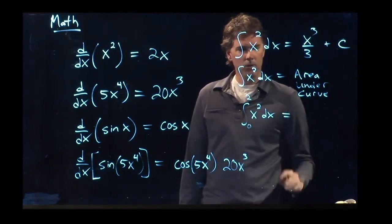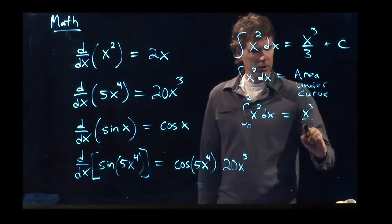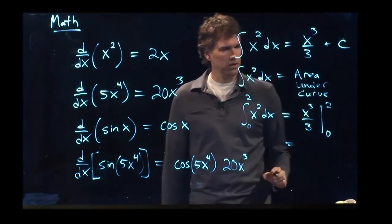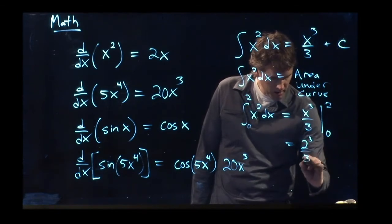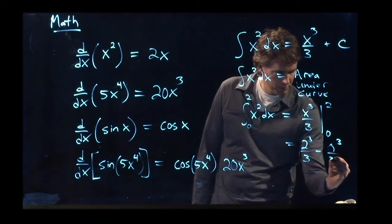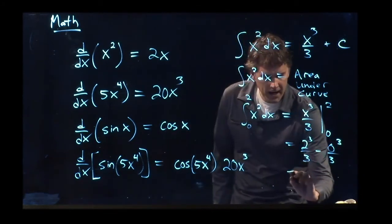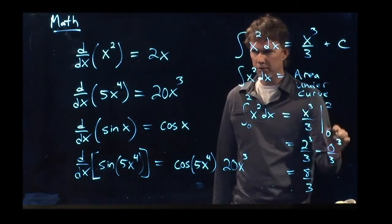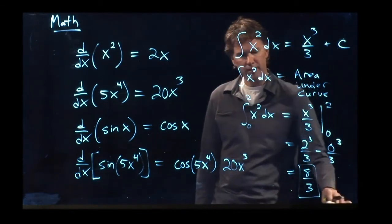what do I get? I get x cubed over 3 evaluated from 0 to 2, which is 2 cubed over 3 minus 0 cubed over 3. 2 cubed is 8, 0 cubed is still 0, and so I get 8 thirds for that value.